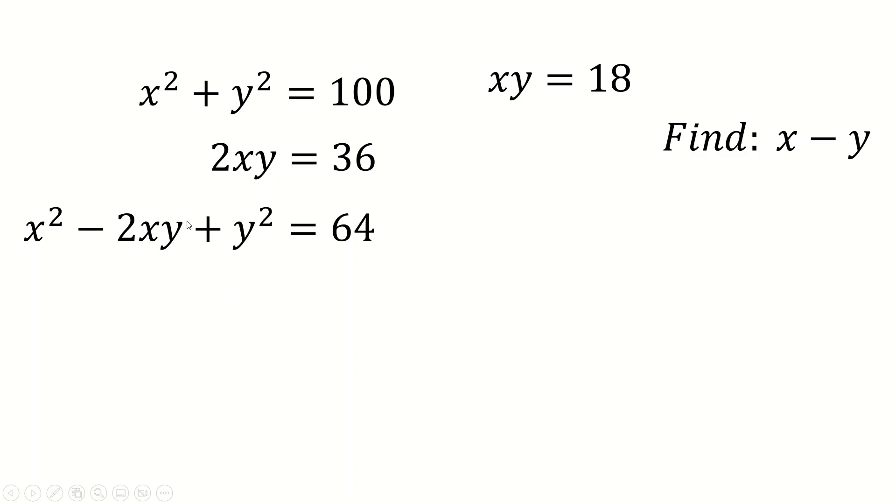But of course that means that this factorizes, it's a nice square quadratic now, it's x minus y squared, because of course when you expand this you get x squared minus two cross terms and then plus y squared. But of course now we can just square both sides, except when you square both sides we're going to get a plus and a minus 8.